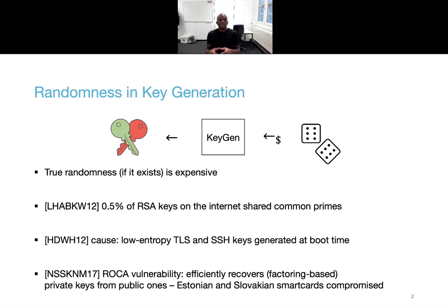For example, Lenstra et al did a sanity check in 2012 and found that a substantial amount of RSA moduli on the internet shared common primes. It means that if the key owners were to realize that, they could sign messages on behalf of others. Heninger et al later identified the cause as the low entropy at boot time when keys were generated.